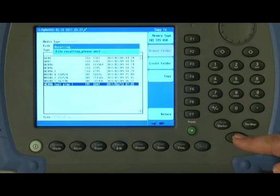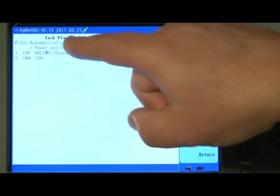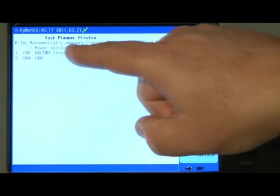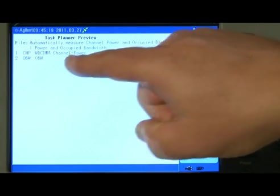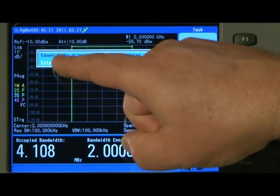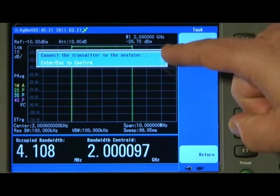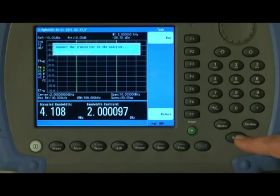If I press enter, you'll see here it says task planner overview. It gives the name of the task plan, the description we gave it and the two tasks. So if I press run, it says here the instruction that we typed in for the operator, connect the transmitter to the analyzer. So we'll connect the transmitter and then press enter.